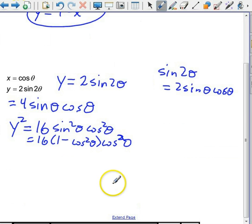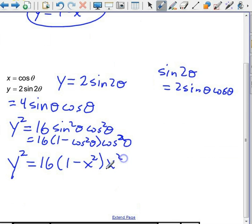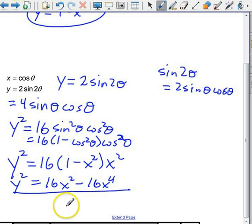And how does that help? Well, x equals cosine of theta. So everywhere there's a cosine, I'm going to replace it with x. So that's 16, 1 minus x squared, times another x squared. And if you want, you can rewrite it as 16x squared minus 16x to the fourth. So that's replacing the parameter and writing everything in terms of y and x.